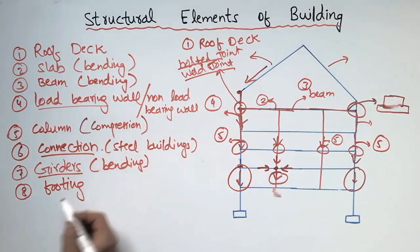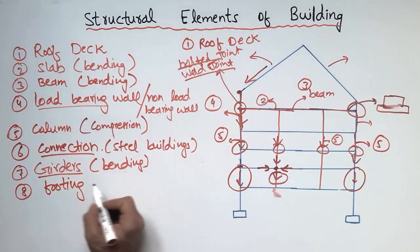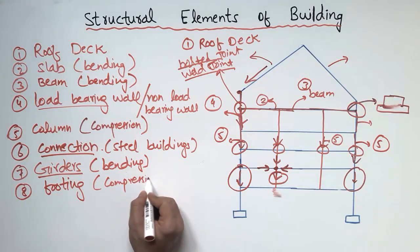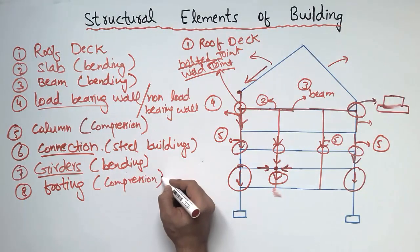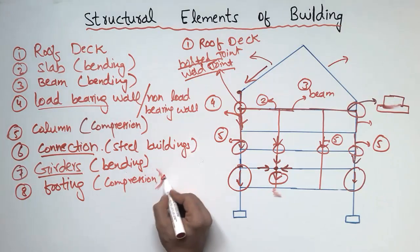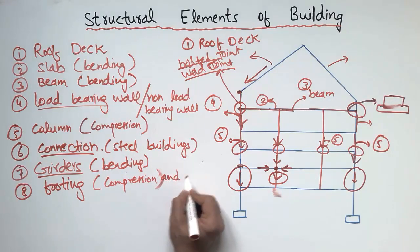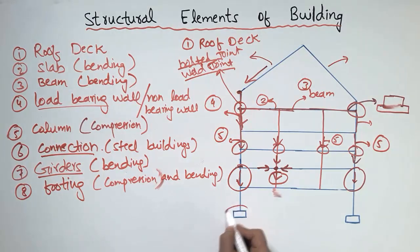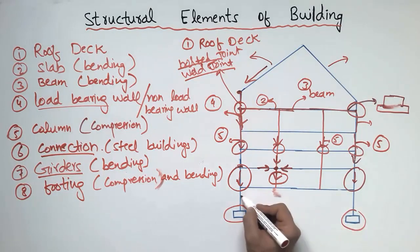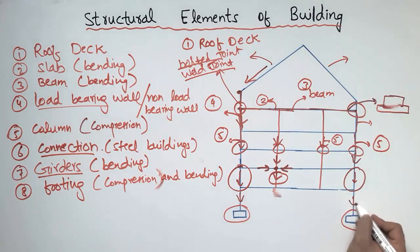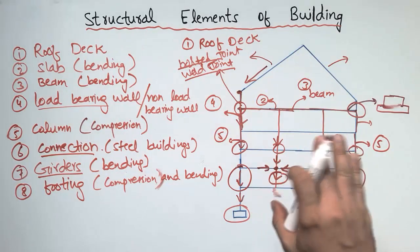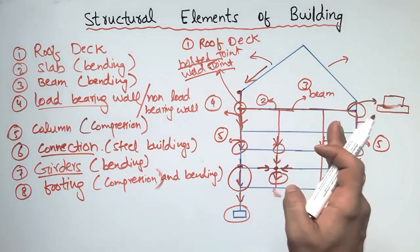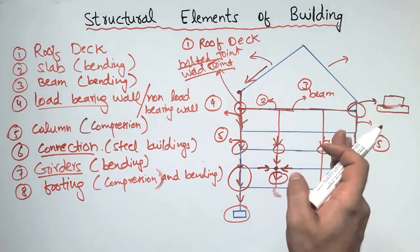The eighth structural element is the footing. Footing is designed for both compression and bending. All the load of the building comes onto the footing, so it must be well designed. There are different types of footing depending on the building — isolated footing, combined footing, strip footing, and so on.